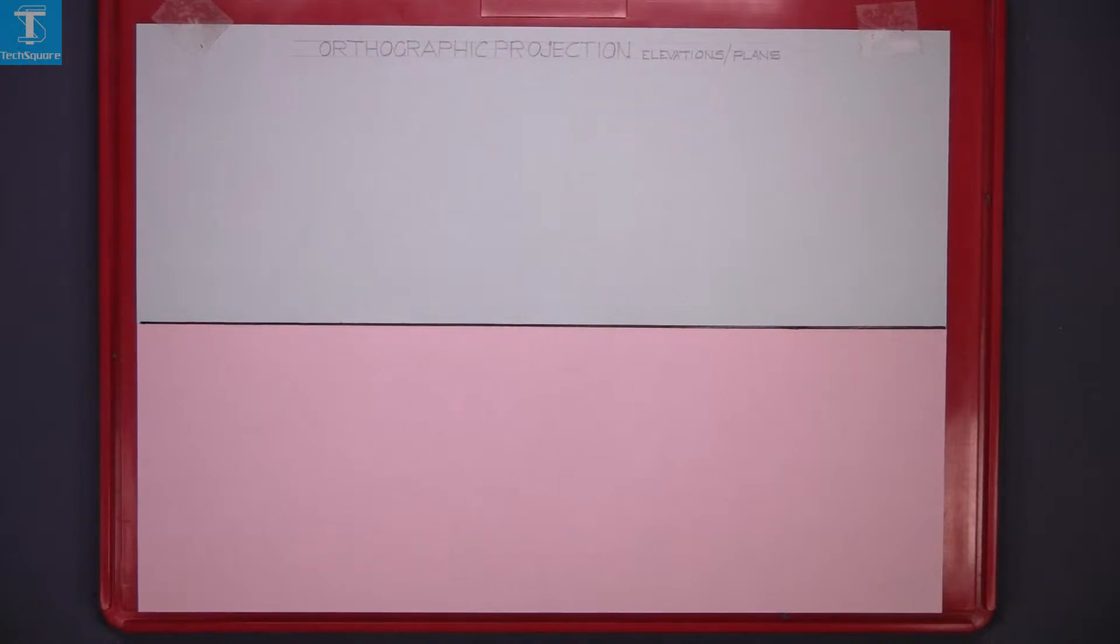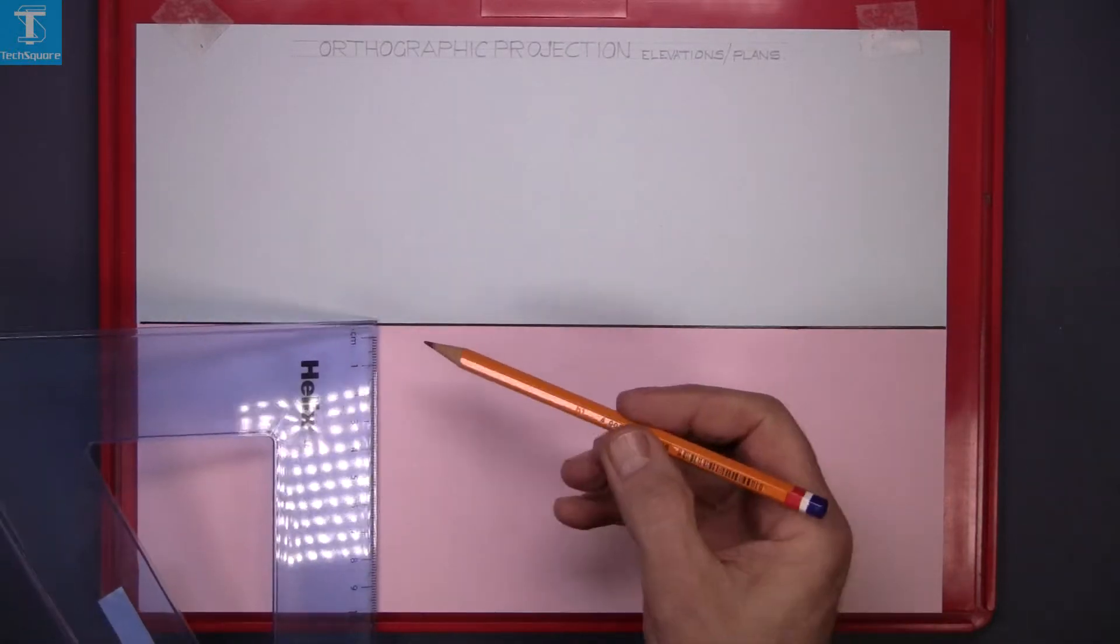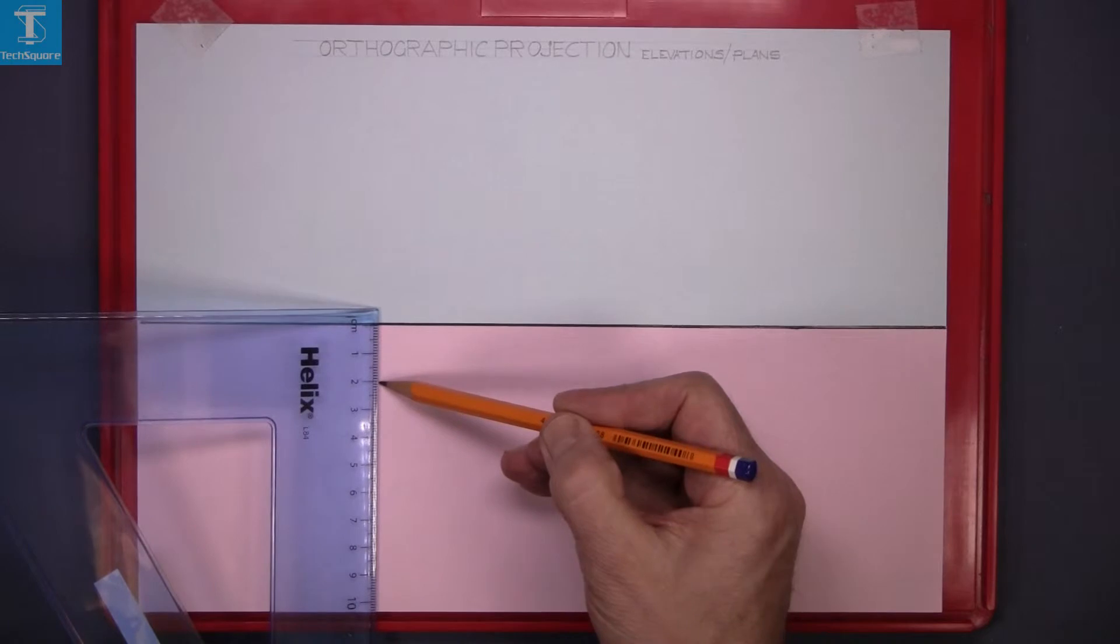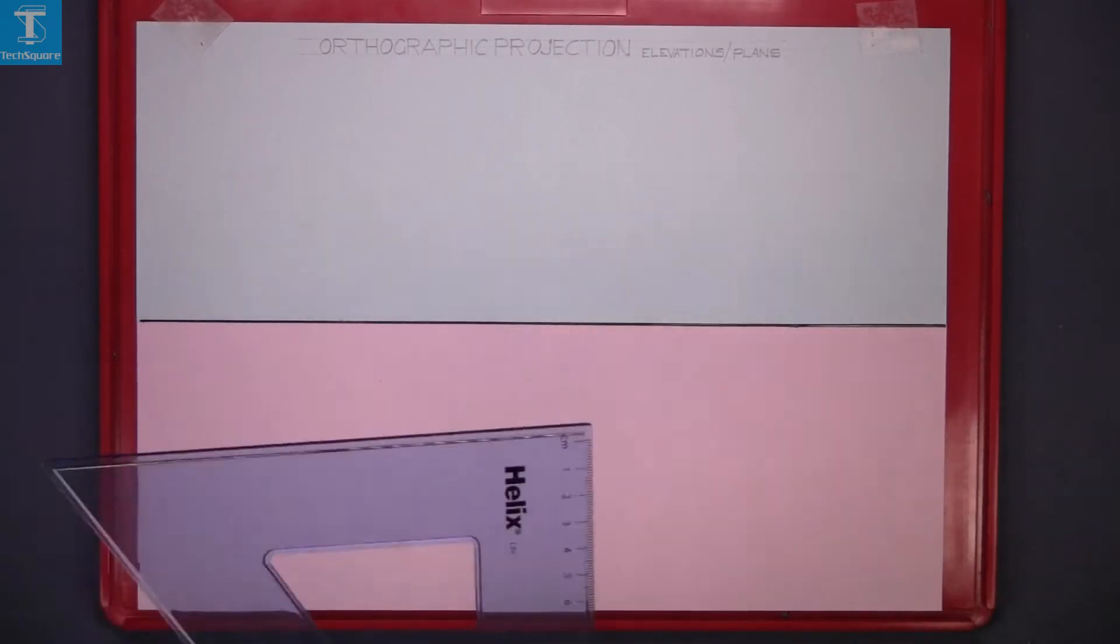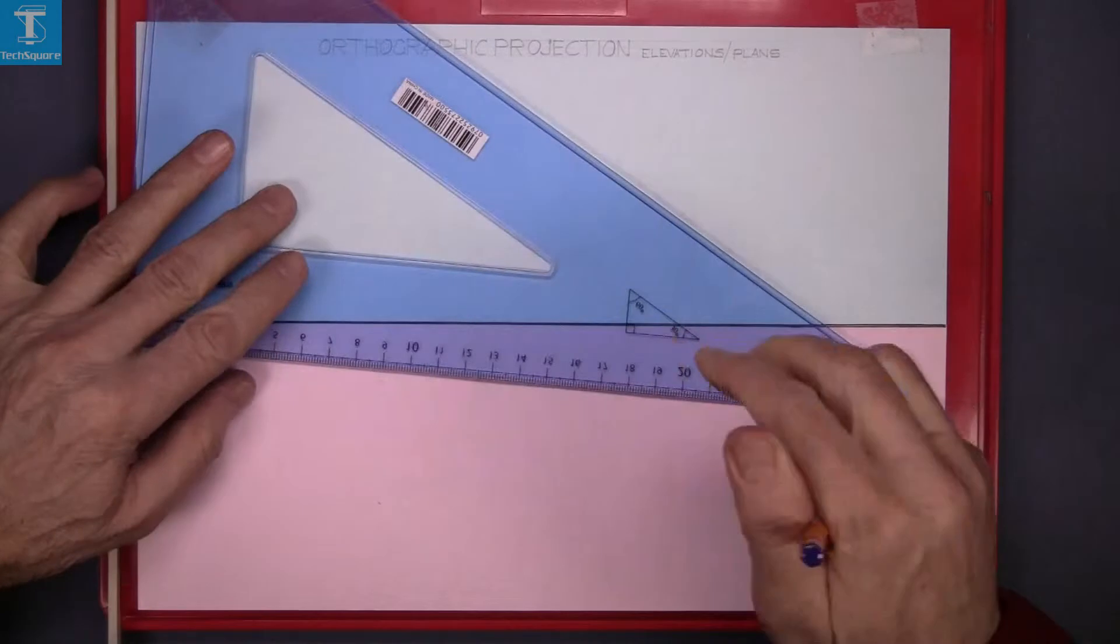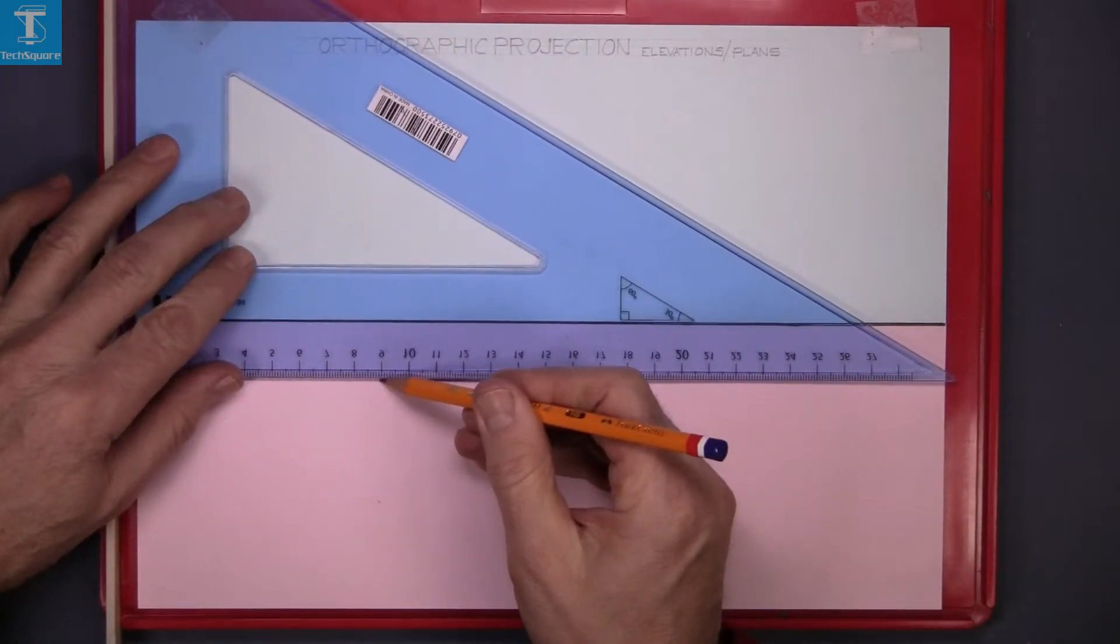We're going to be drawing on the pink section, so measure down 20 from the blue and then 45. Now draw two light lines across the sheet.